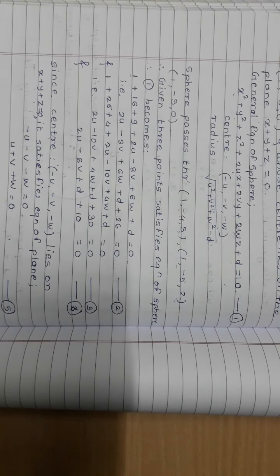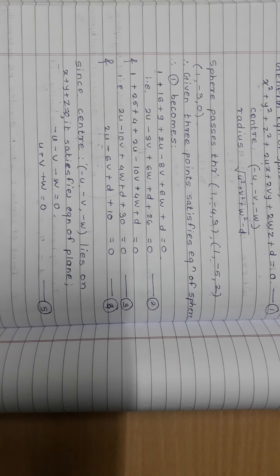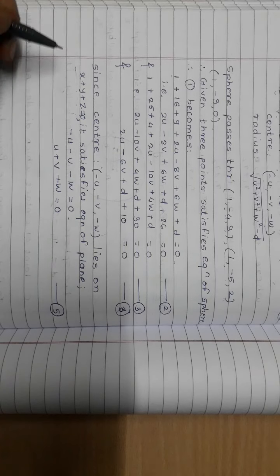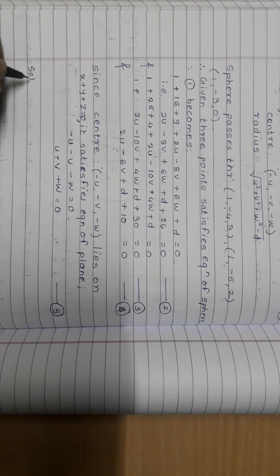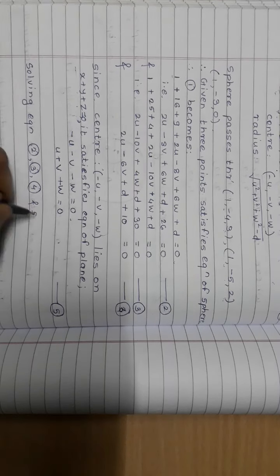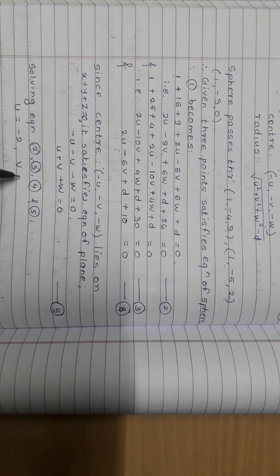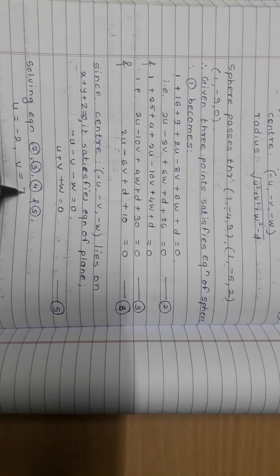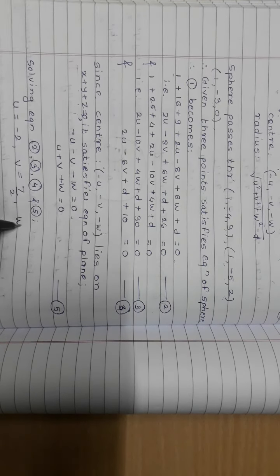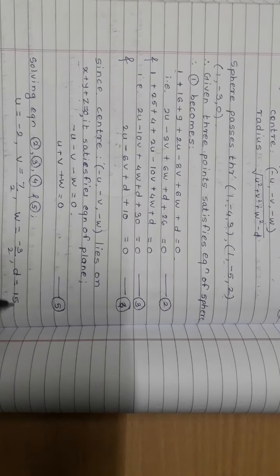Now I need to find u, v, w, and d using equations 2, 3, 4, and 5. Solving these equations gives: u = −2, v = 7/2, w = −3/2, and d = 15.